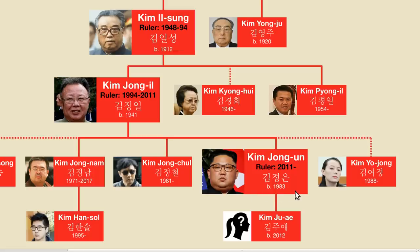Well, first of all, let me tell you, we don't actually know. There is no set line of succession, and information from North Korea is notoriously unreliable and difficult to obtain. But with that said, let's take a look at the family tree and familiarize ourselves with the many players.